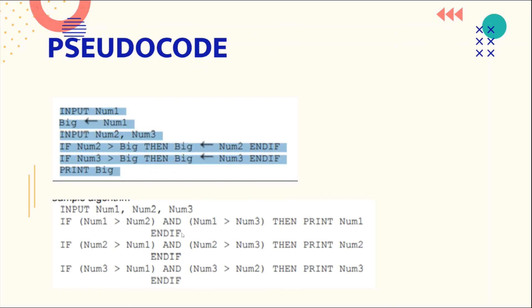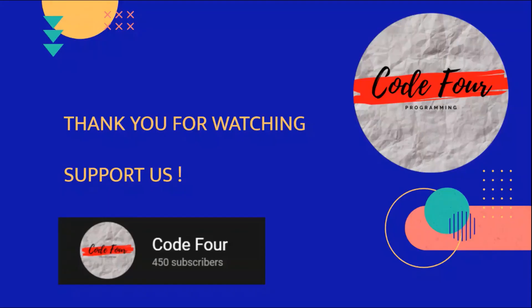Then print Number1. End If. If Number2 > Number1 AND Number2 > Number3, then print Number2. End If. If Number3 > Number1 AND Number3 > Number2, then print Number3. End If. This is how you write the pseudocode for this problem.